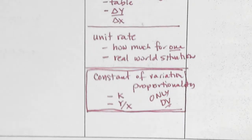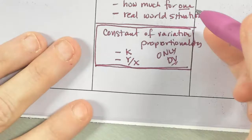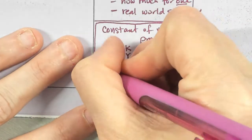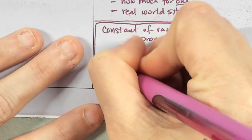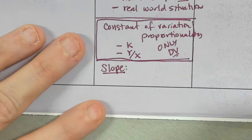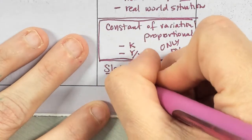Now that we've talked about all these different ways that we talk about slope, we're going into our final form. And that final form is slope.